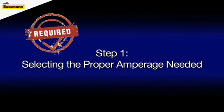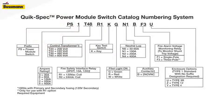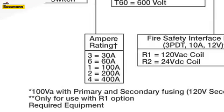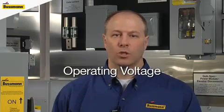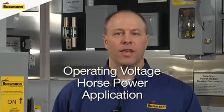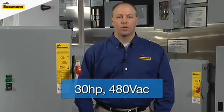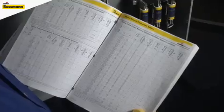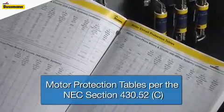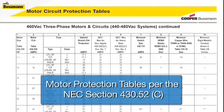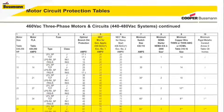The first step in a nine-step process for building a power module switch part number is to determine the switch amperage needed. For this, you will need the operating voltage, horsepower rating, and application the elevator is designed to operate. For our example, we will use a motor with a 30 horsepower rating at 480 volts AC. As we look at the NEC section for 30 horsepower, we can see the proper sizing for a general duty elevator motor would be 70 amps.